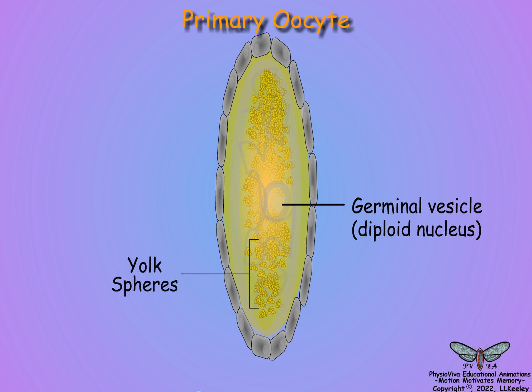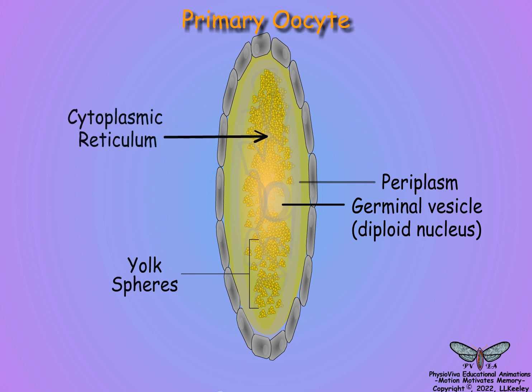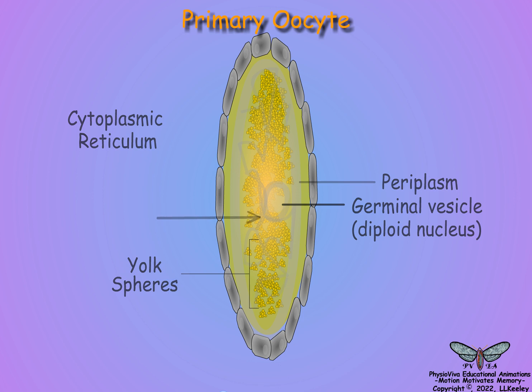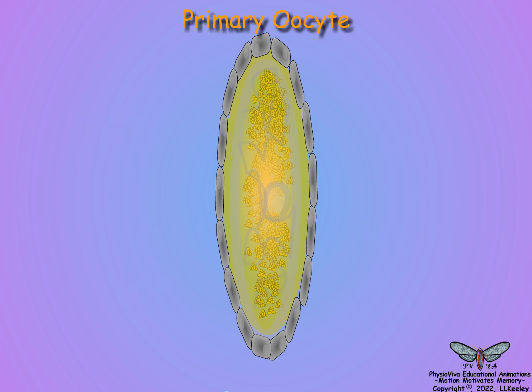The oocyte nucleus is diploid and termed the germinal vesicle. Oocytic cytoplasm is organized as an outer layer, termed the periplasm, that surrounds the yolk, plus an irregular inner cytoplasmic reticulum. The egg shell consists of three layers.